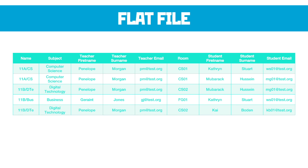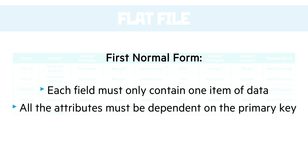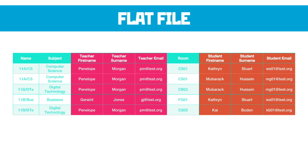The process to get to first normal form is to make sure that each field must only contain one item of data, so we break anything up that has multiple bits of data in it, and all attributes must be dependent on the primary key. In plain English, we're going to split the tables up so they contain only information relevant to a certain entity. Looking at this table we have three things: information about the subject, information about the teacher, and information about the student. So let's separate those into their own tables.